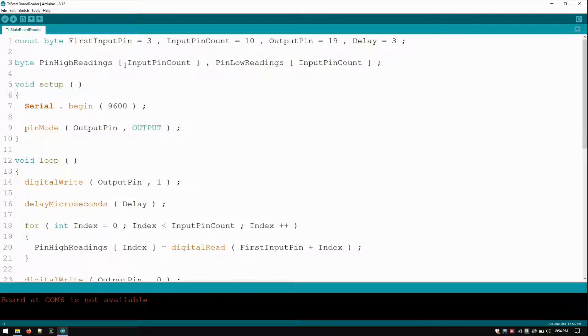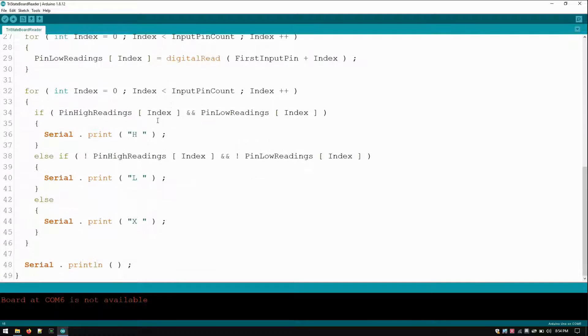So here I store the high and low readings because I have to compare them. So we turn on serial, set the signal out, the control out to output, and then we just read over and over.